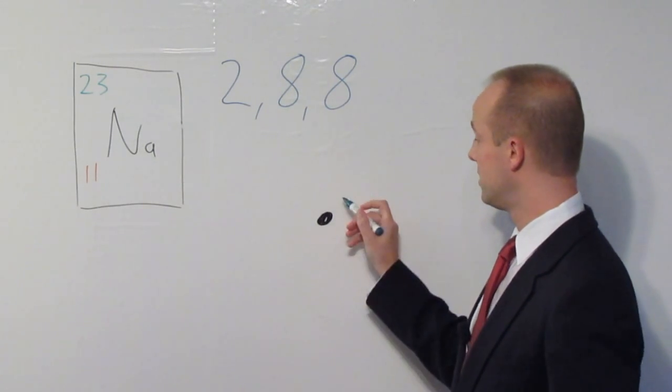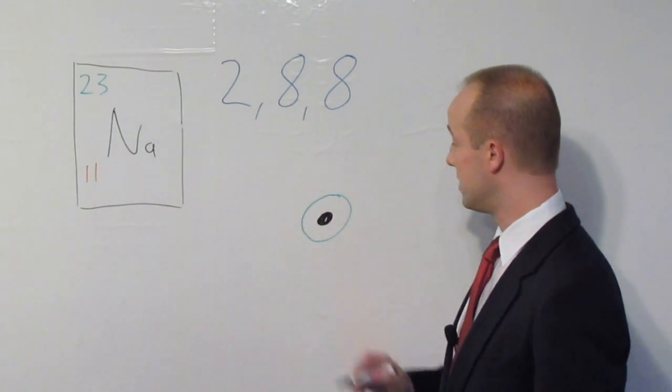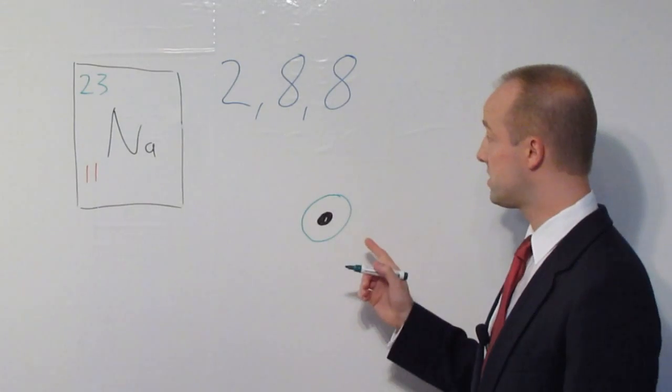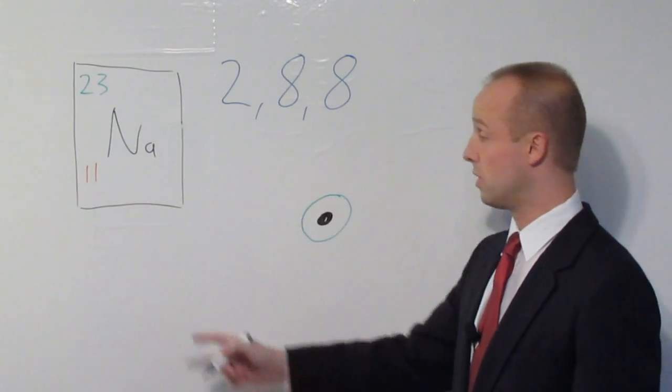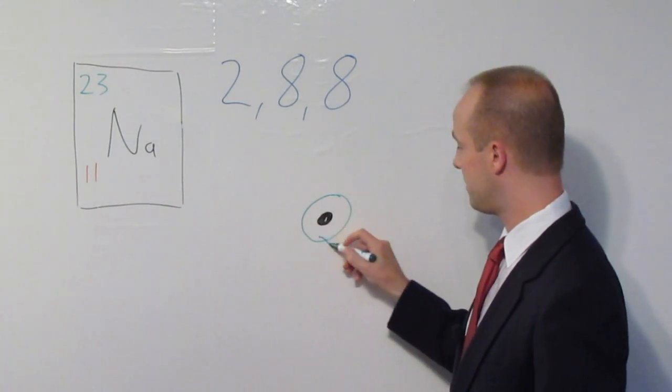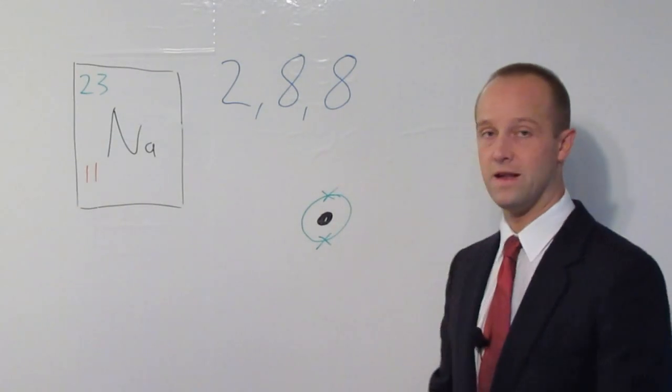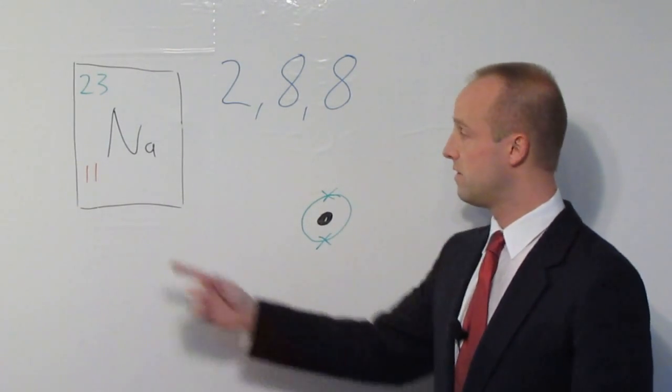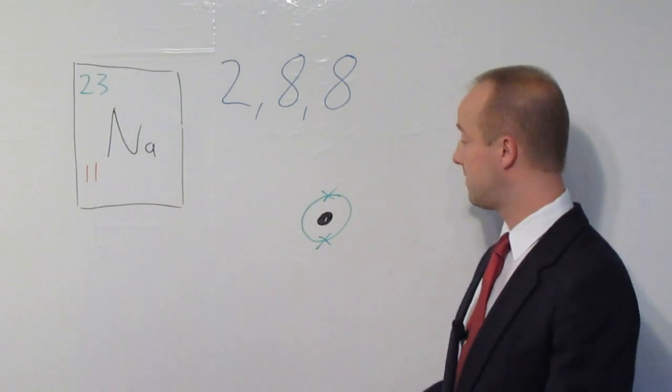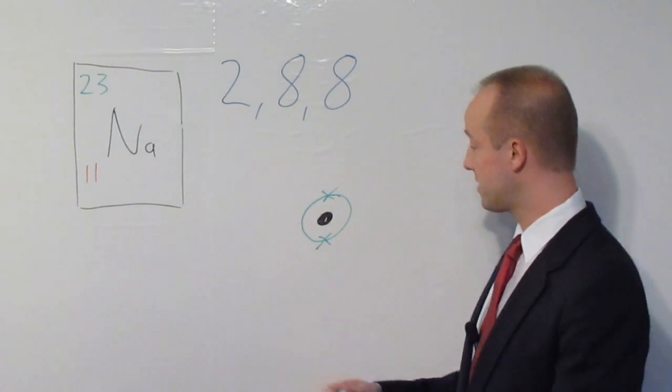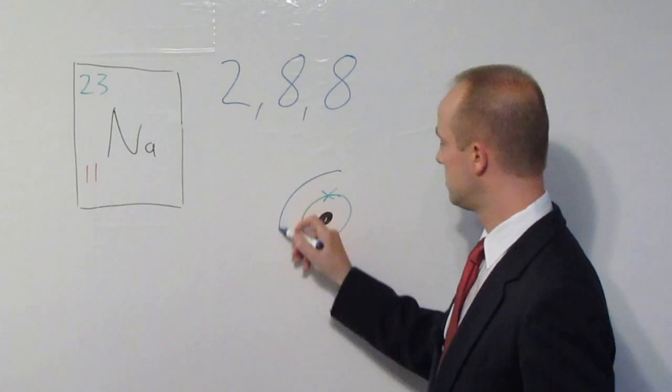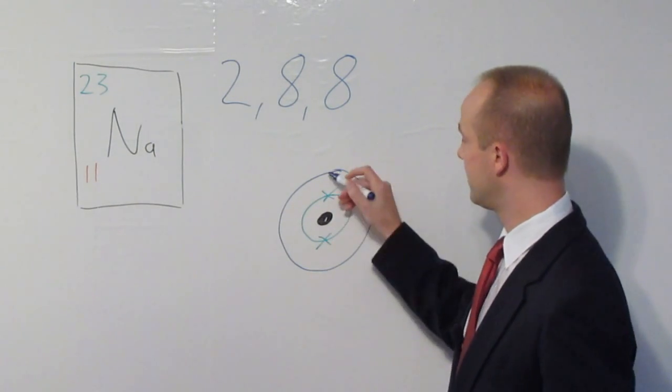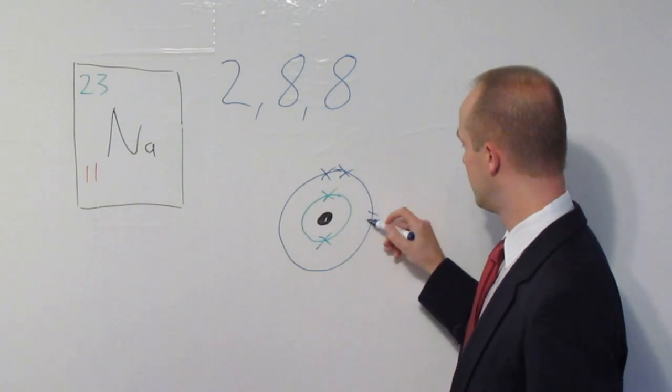Coming out from the nucleus are the orbits which I mentioned, the electron shells. And in this first shell, we can fit a maximum of two. Well, we've got 11 to fit in there, so let's put our first two electrons in that first shell. That removes two from our 11, so we've got nine still to fit in there somewhere. So, our next shell out. Let's start filling that up. One, two, three, four,